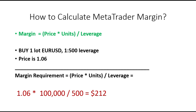Around the web people talk about contracts, but in MetaTrader 4 and MetaTrader 5 we don't use contracts. We use micro lots, mini lots, and lots. A micro lot is 1,000 units, a mini lot is 10,000 units, and a lot is 100,000 units. So if we have one lot EUR/USD and our leverage is 1:500, with a price of 1.06, we multiply 1.06 by 100,000 and divide by 500, and we get $212. So the required margin is just over $200.